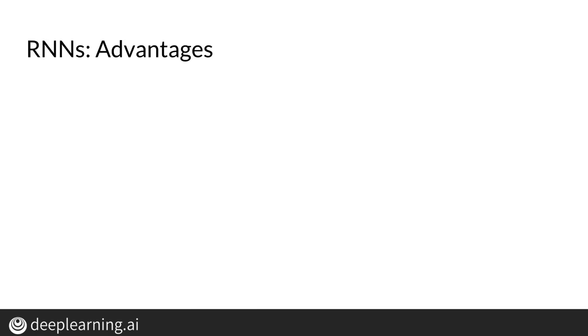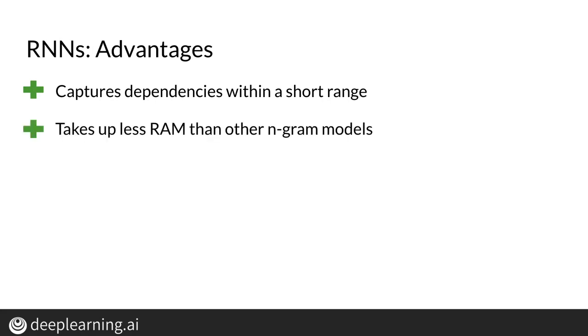Let's begin with a discussion of some of the pros and cons of using a recurrent neural network. For one, the way plain or vanilla RNNs model sequences by recalling information from the immediate past allows you to capture dependencies, to a certain degree at least. They're also relatively lightweight compared to other n-gram models, taking up less RAM and space.